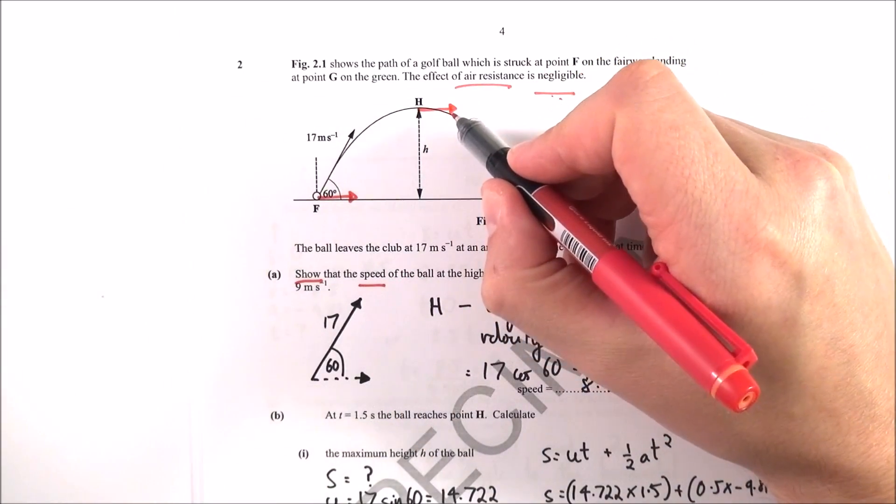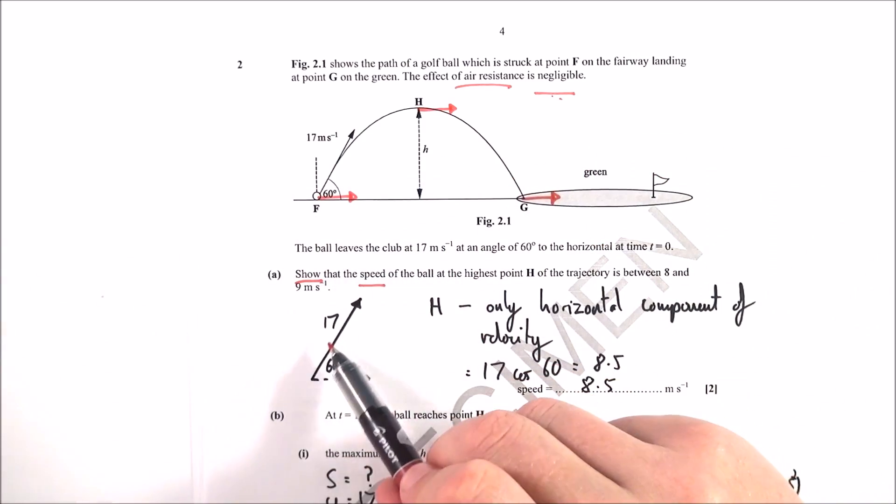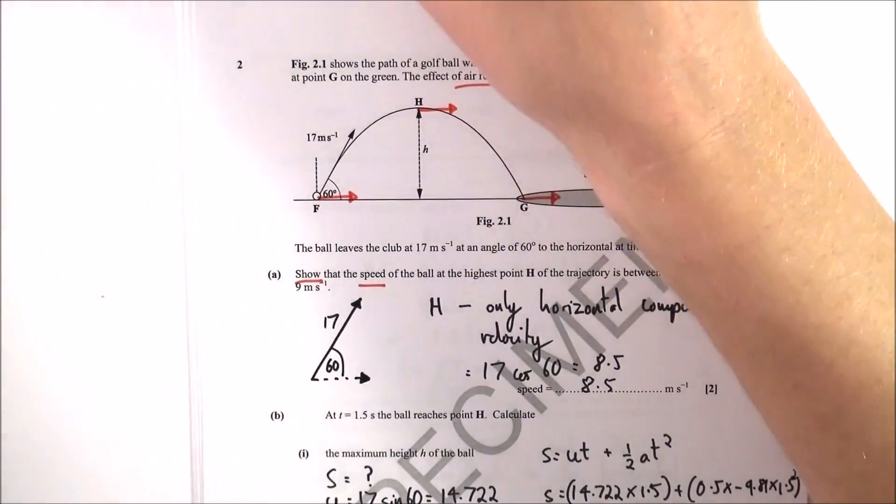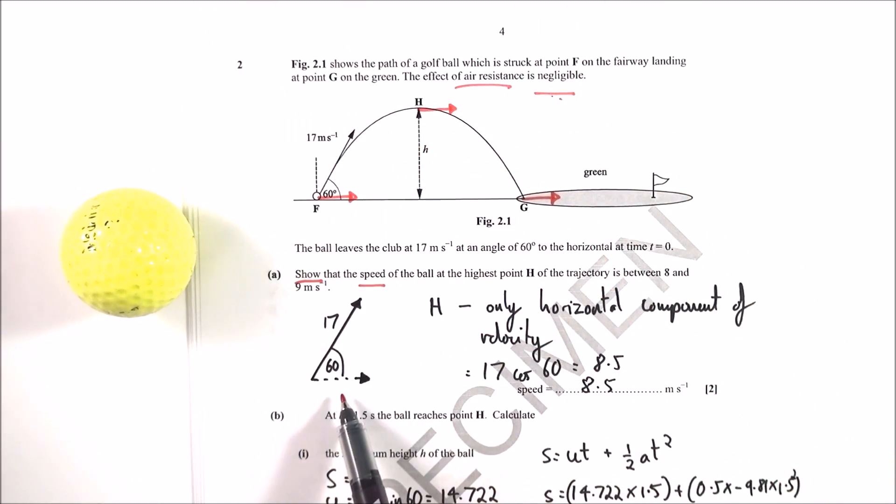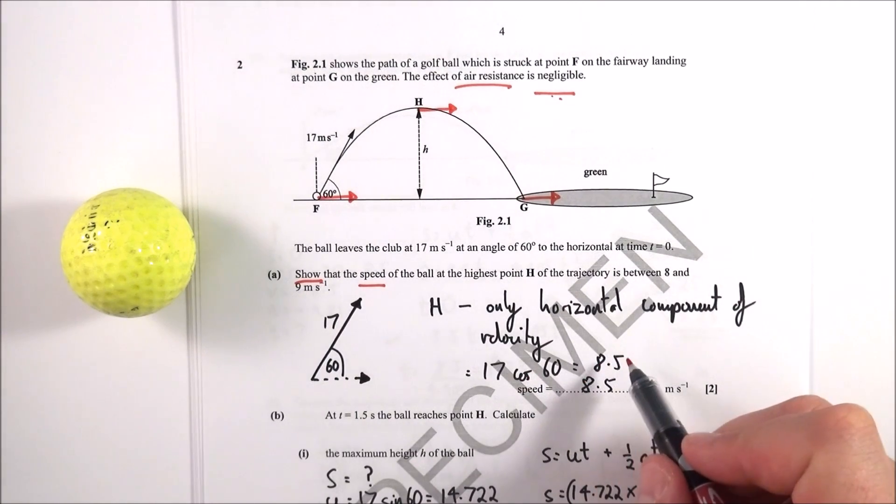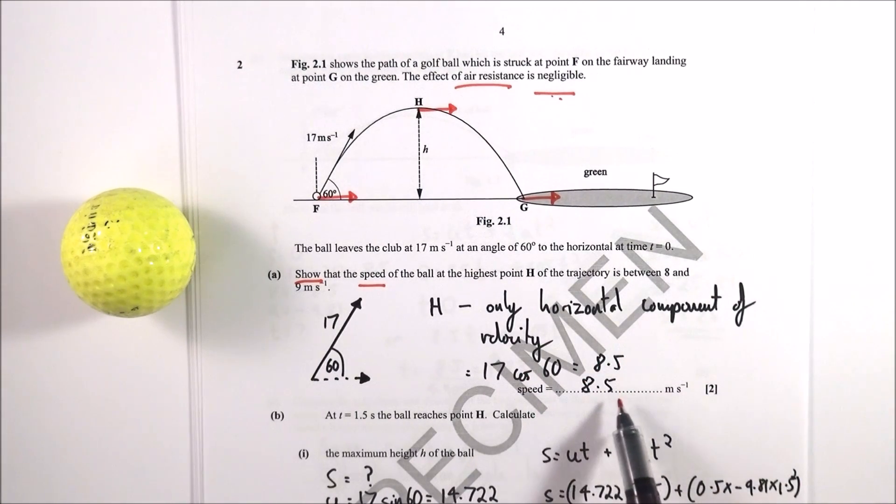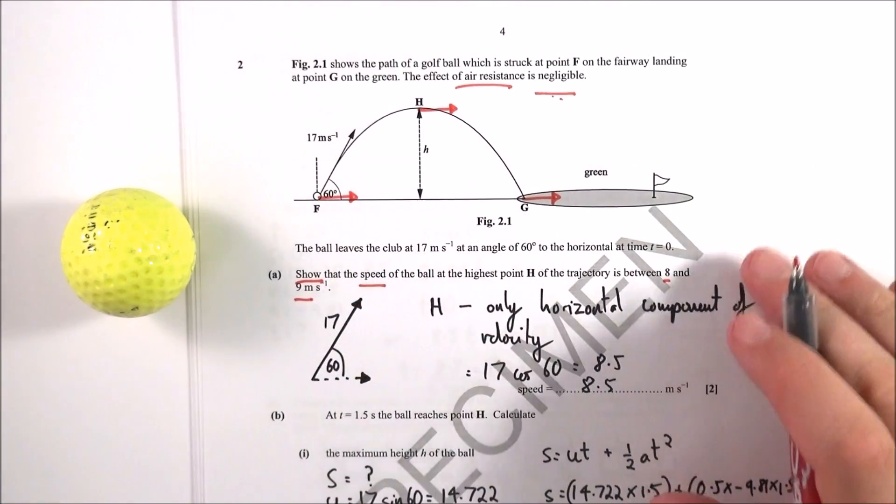Therefore, the horizontal speed at H, the speed of the ball, is just going to be equal to the horizontal component of the velocity because at H there's no vertical component of velocity. So it's going at 17 meters per second up at an angle of 60 degrees, and therefore this distance is equal to 17 cos 60 which equals 8.5. Therefore the speed is 8.5 meters per second, which is between the 8 and 9 that I needed to show.